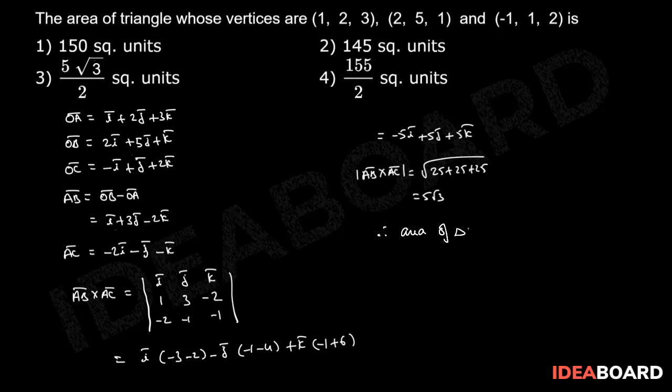area of triangle ABC equals to half mod AB bar cross AC bar. That equals to 1 by 2 into 5 root 3. Therefore, option 3 is correct option.